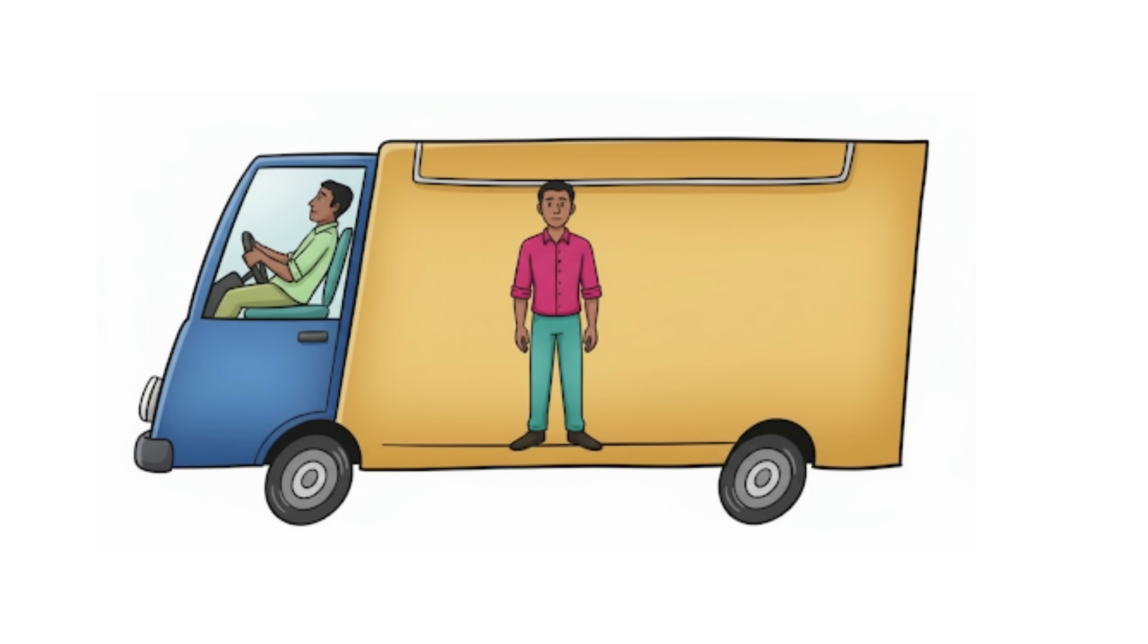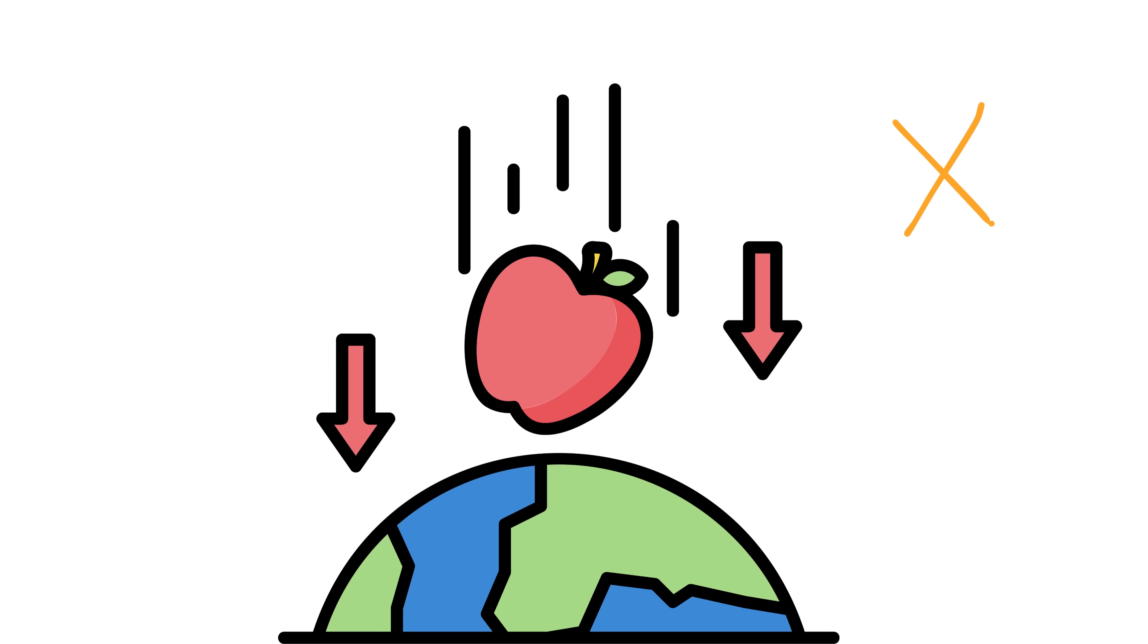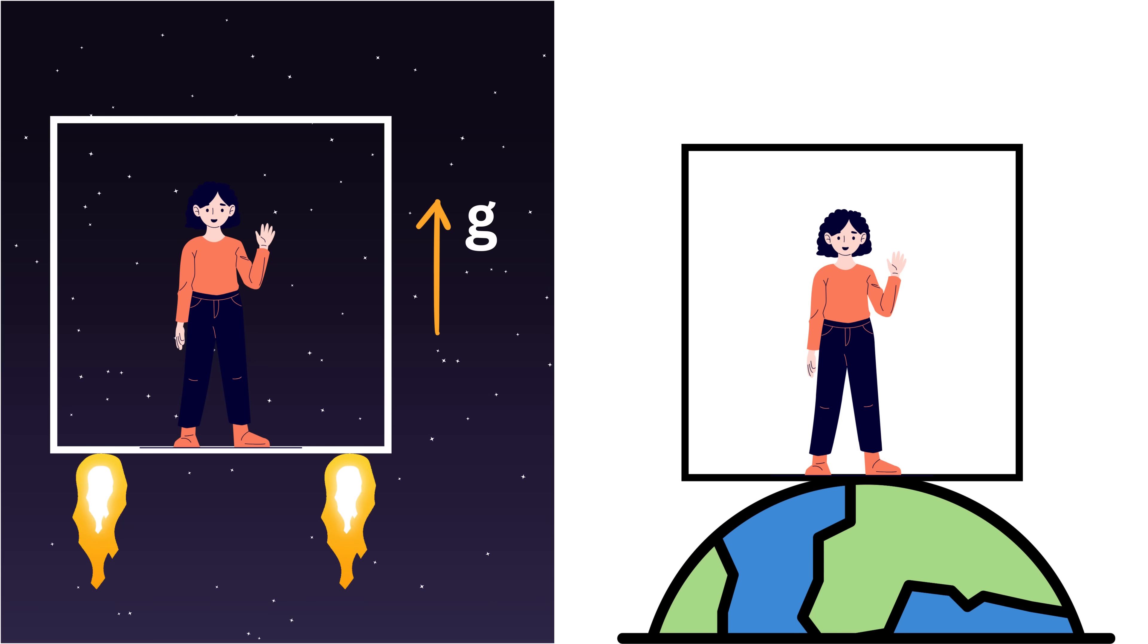It's just like when you're sitting in a bus that suddenly accelerates. You feel a jerk, as if you're being pushed back, even though nothing is actually touching you. That sensation is because of the acceleration of the bus, and it can easily be mistaken for a force, something like gravity. There's no experiment you can do inside that sealed room to tell whether you're standing still on Earth or being accelerated in space.